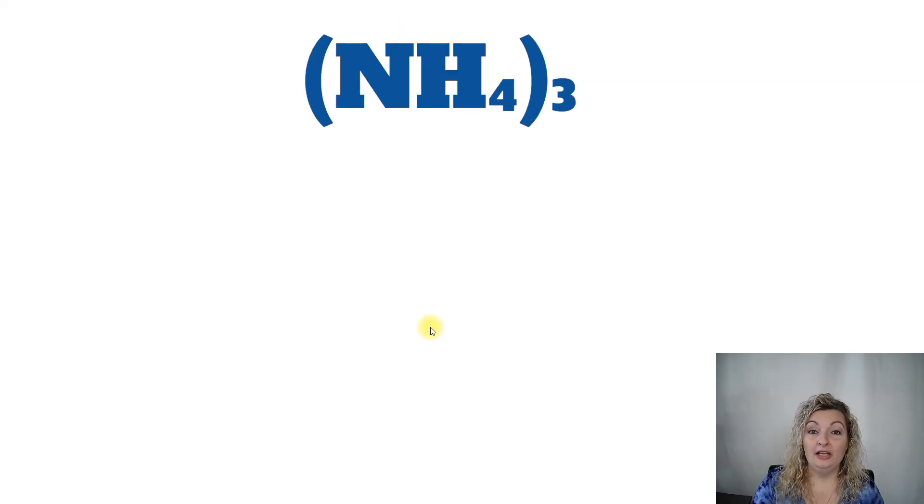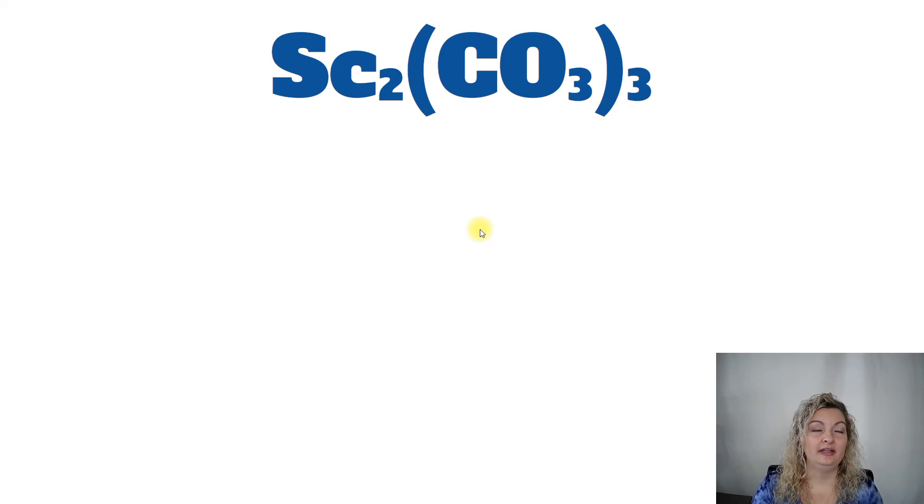Let's go ahead and look at an interesting one. Now we have a subscript on the outside of some parentheses. This is new. We haven't seen this before. So what do we do? You're going to write down your elements. And then we're going to count them. So you're going to start with the outside of the parentheses, the number on the outside. And you're going to distribute to the inside to all elements inside the parentheses. You're only going to go to the elements inside the parentheses. You're never going to go outside the parentheses with that subscript that's on the outside. So we're going to go 3 times the 4, and that gives us 12 for hydrogen. And we're going to go 3 times an understood 1, and we're going to do 3 for nitrogen.